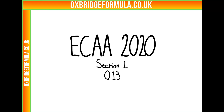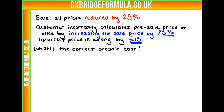In this video, we're looking at ECHA 2020, section 1, question 13. We have a sale going on where all prices are reduced by 25%, and the customer incorrectly calculates the pre-sale price of a bike by increasing the sale price by 25%, which obviously isn't how you calculate it. The incorrect price was wrong by £15, and we're asked to find out what is the correct pre-sale cost.